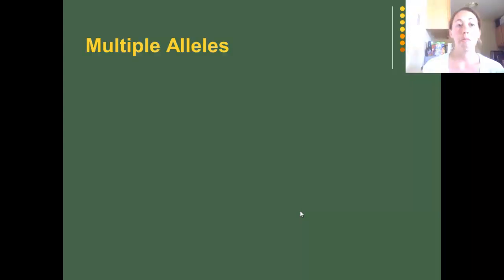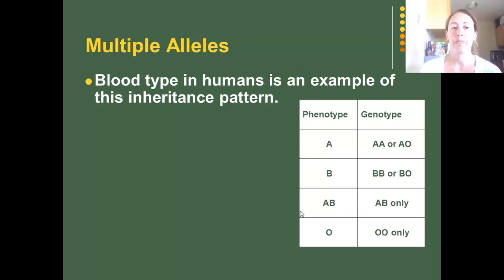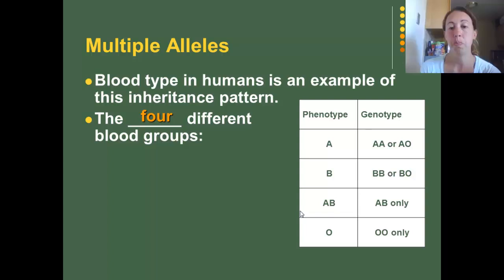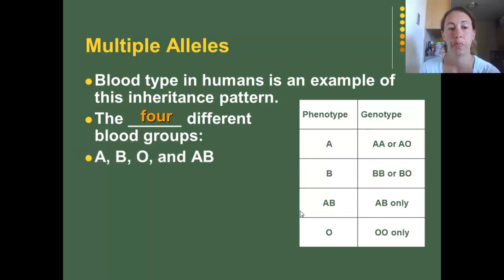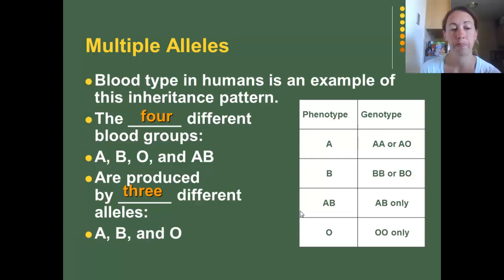An example of multiple alleles is blood types in humans. The four different blood groups — A, B, AB, and O — are produced by three different alleles: A, B, and O.